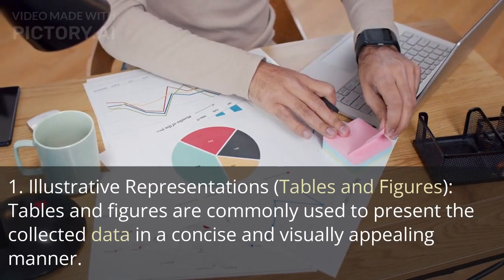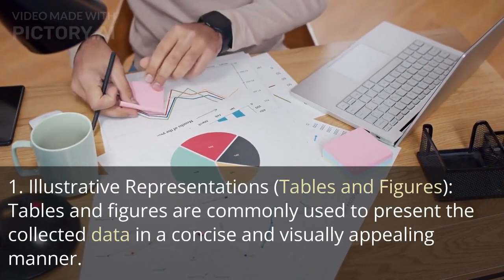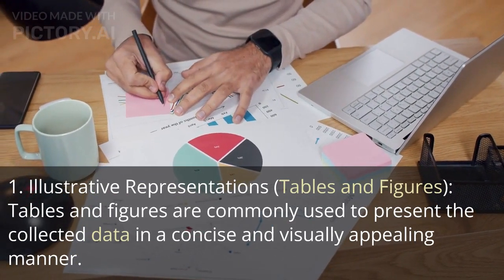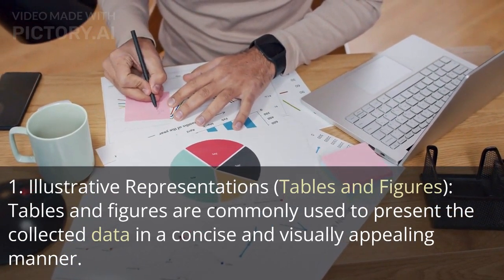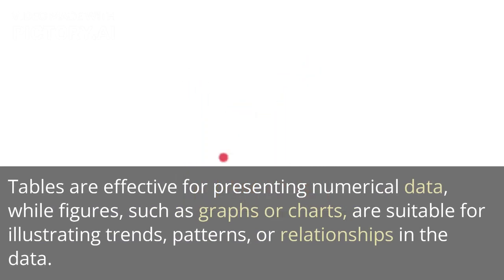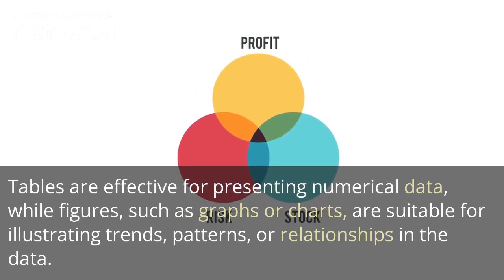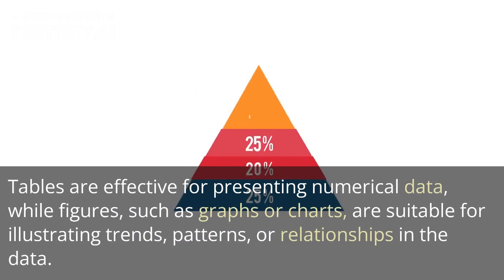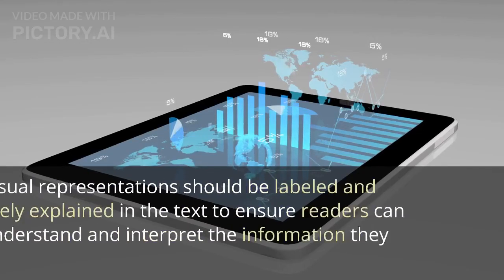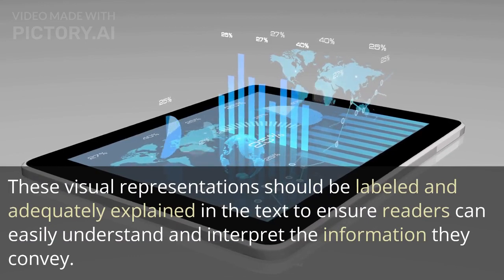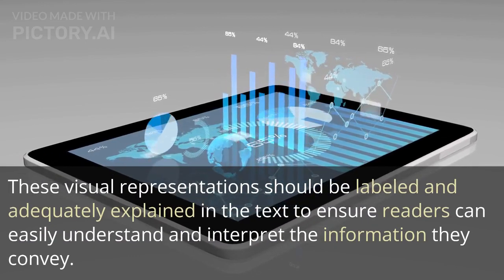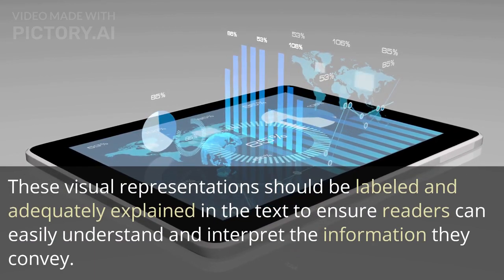1. Illustrative representations — tables and figures. Tables and figures are commonly used to present the collected data in a concise and visually appealing manner. Tables are effective for presenting numerical data, while figures such as graphs or charts are suitable for illustrating trends, patterns, or relationships in the data. These visual representations should be labeled and adequately explained in the text to ensure readers can easily understand and interpret the information they convey.